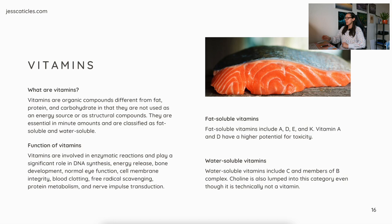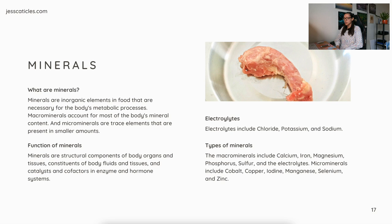What are minerals? Minerals are inorganic elements in food that are necessary for the body's metabolic processes. Macrominerals account for most of the body's mineral content, and microminerals are trace elements present in smaller amounts — macro means big, micro means small. Minerals are structural components of body organs and tissues, constituents of body fluids and tissues, and catalysts and cofactors in enzyme and hormone systems. Electrolytes include chloride, potassium, and sodium. The macrominerals are calcium, iron, magnesium, phosphorus, sulfur, and the electrolytes. The microminerals include cobalt, copper, iodine, manganese, selenium, and zinc.